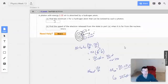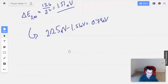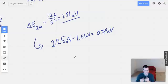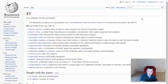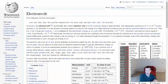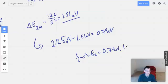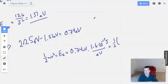It asks, find the speed of the electron released from the state when it is far from the nucleus. Far basically means no more influence from the potential energy. So we're going to do 1/2 mv squared equals energy kinetic, which equals 0.74 electron volts times 1.6 times 10 to the negative 19th joules per electron volt.